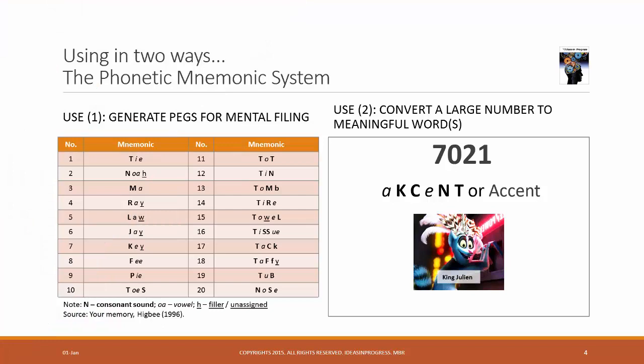In the end, I want to share two general ways in which you can use the Phonetic system. The first way of using the Phonetic system is to basically generate pegs for mental filing. As you can see, a list of pegs for numbers 1 to 20. It's just an example. You can make your own pegs. The possibilities are endless.